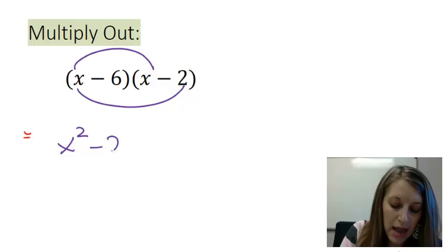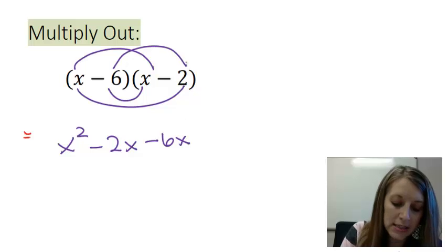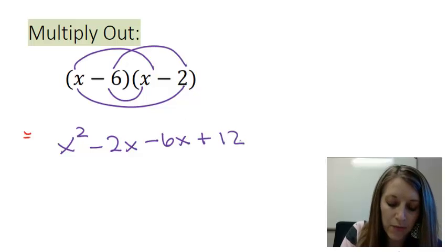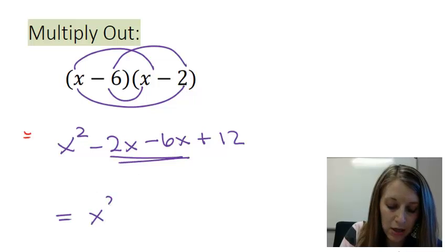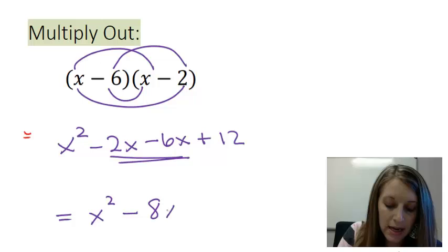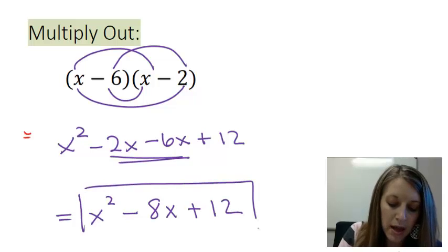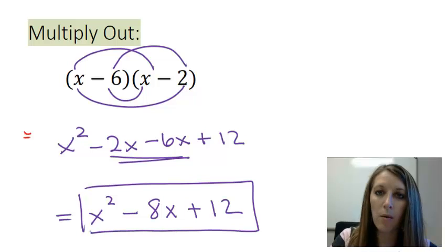Outside gives me a negative 2x. Inside gives me a negative 6x. And last gives me a positive 12. And then I can combine my middle terms, my like terms. It gives me x squared minus 8x plus 12. So here is my answer of this problem.